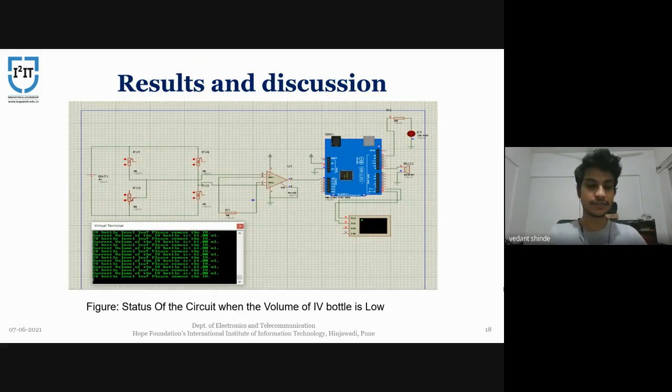On the other hand, here, the status of the circuit, this is the status of the circuit when the volume of IV bottle is low. As you can see, the volume is 61 ml. And the LED and the buzzer are in on state.